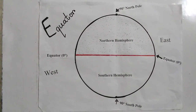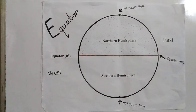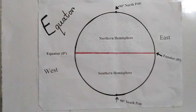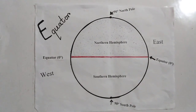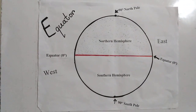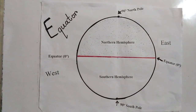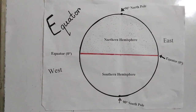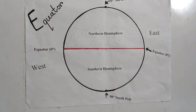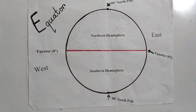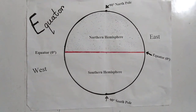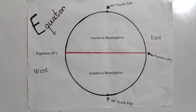The equator subtends 0 degrees. It is also called 0 degree latitude. In the figure, the red colored horizontal line is the equator. The equator has divided the Earth into two equal parts. The upper part of the equator is called the northern hemisphere and the lower part is known as the southern hemisphere. The distance of the north pole from the equator is 90 degrees, and that of the south pole is 90 degrees.